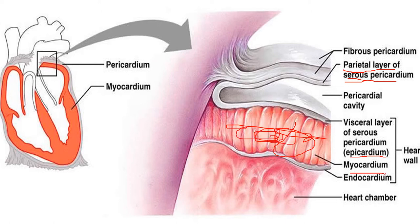Then your endocardium, which is actually an endothelial layer — a serous layer — that is continuous with the inside of the heart chambers. The endocardium continues as it extends out and changes its name: it becomes the endothelial layer of your blood vessels.